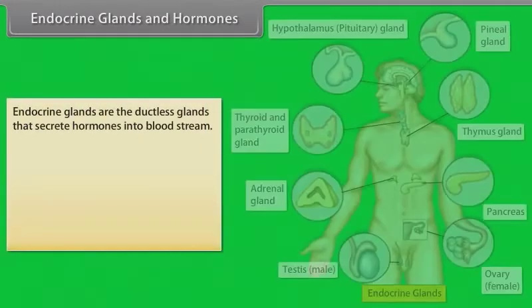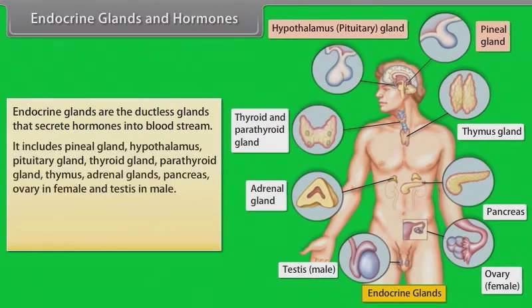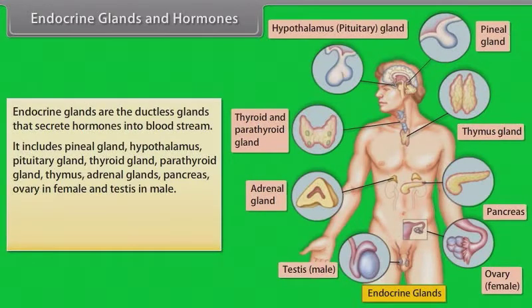Endocrine glands are the ductless glands that secrete hormones into the bloodstream. They include the pineal gland, hypothalamus, pituitary gland, thyroid gland, parathyroid gland, thymus, adrenal glands, pancreas, ovary in female and testis in male.